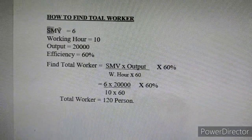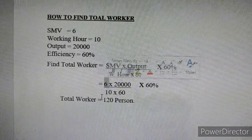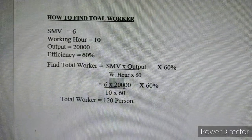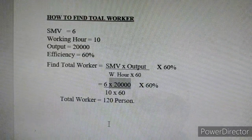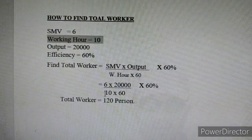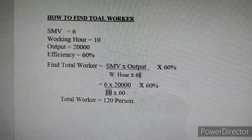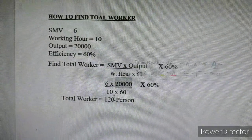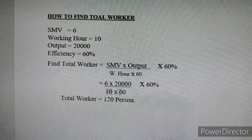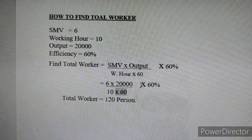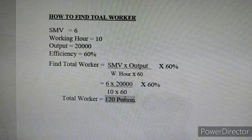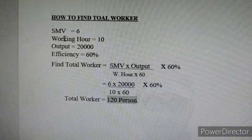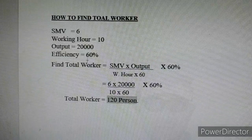SMB is 6. SMB multiplied by Output divided by 20,000 — that means we have 20,000 output. Working hour is 10,000. So we have 60%. We are doing the same SMB calculation: for 10 hours a day, the result will be 120,000.